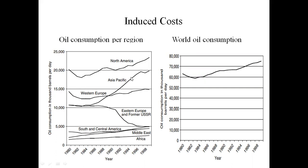Eastern European countries show a decreasing consumption from 1992 to 1998. South and Central America, Middle East, and Africa countries are below 5,000 barrels per day. The worldwide oil consumption is 60,000 to 80,000 barrels per day, increasing every two years. The next slide shows worldwide oil consumption by industrialized and developing countries from 1992 to 2020, in millions of barrels per day, ranging from 0 to 50.